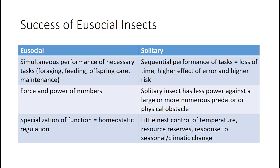Second, social insects can rally all troops to defend against a larger or more numerous predator and construct a nest, compared to a solitary insect. Thirdly, the specialization of function allows some homeostatic regulation such as holding food reserves, temperature regulation, and distribution of resources depending on the demands of the season and colony age.